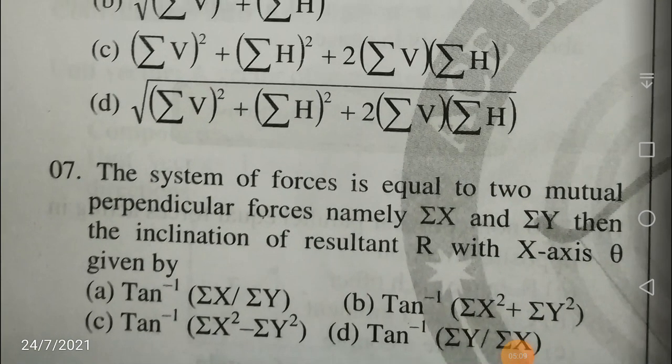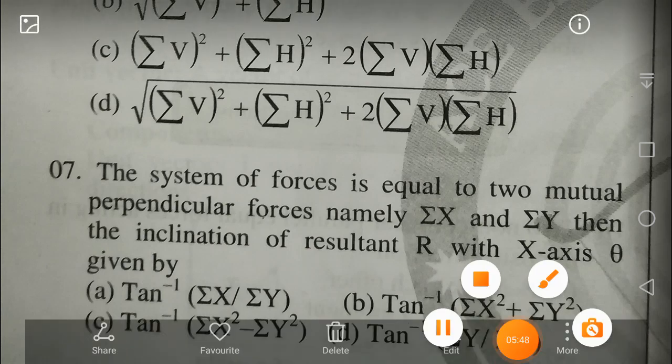The system of forces is equal to two mutually perpendicular forces, namely σX and σY. The inclination of resultant with the X-axis theta is given by — definitely it is equal to σY by σX, where σX is the algebraic sum of the horizontal components and σY is the algebraic sum of the vertical components. So theta is given by tan inverse of σY by σX, or conversely tan theta is equal to σY by σX. Your answer is D.